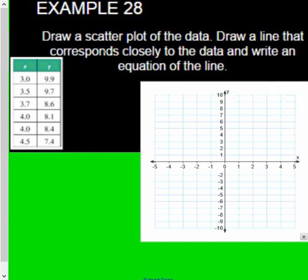Okay, so we need to put these on the scatterplot, draw a line, and then write the equation of the line. Notice I'm only going from negative 5 to 5 because I don't really need that many x values.